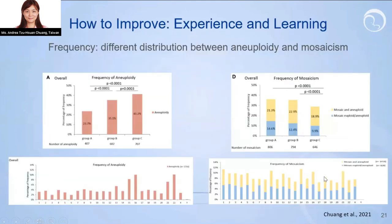We learned a great deal from these procedures. One application is a nice-to-know finding: we calculated chromosome-specific aneuploidy rates and found that the pattern displayed very differently across individual chromosomes between aneuploid groups and mosaic groups. Although it is nice-to-know information, we published it last year as well.